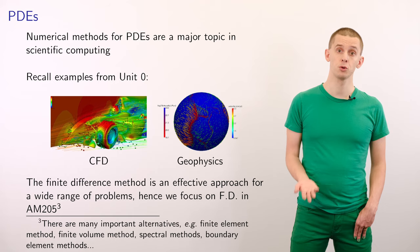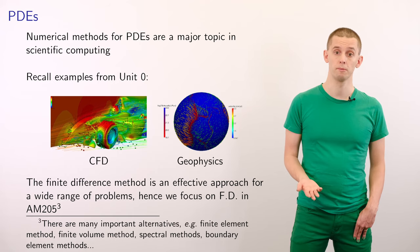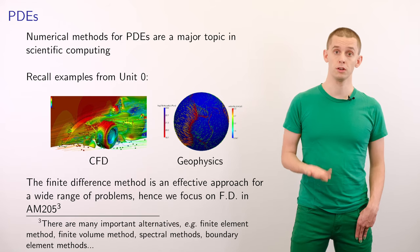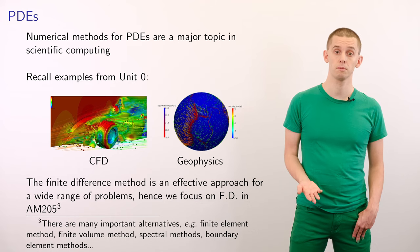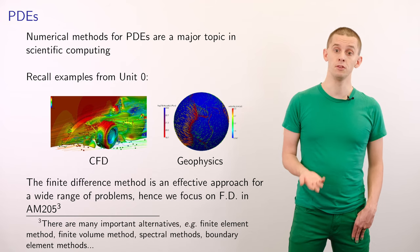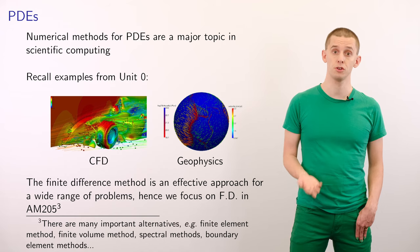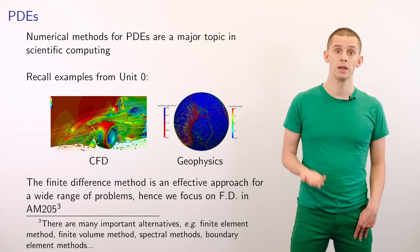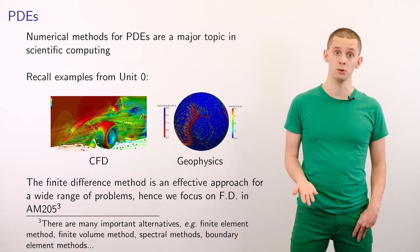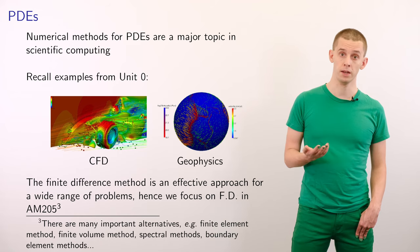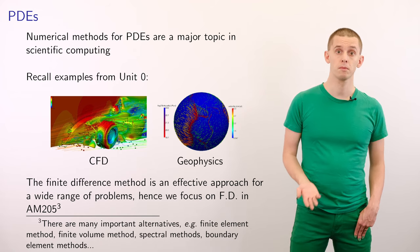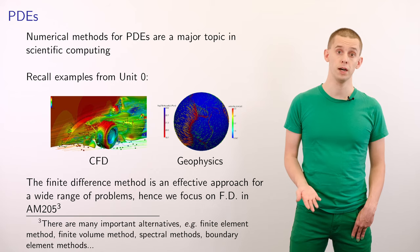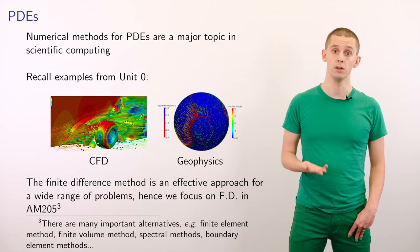Numerical methods for partial differential equations is a major topic in scientific computing. You may recall from the start of the course, we gave several examples, such as in computational fluid dynamics or in geophysics. The finite difference method is an effective approach for solving a wide range of partial differential equations, and we'll focus on this in Applied Math 205. However, there are actually many other important alternatives, such as finite volume methods, finite element methods, or spectral methods. If you're interested in these, I have a course that's offered in the spring, Applied Math 225, that covers a number of these in detail.